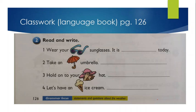Read and write. We have to complete these blanks. First, read each sentence. Wear your sunglasses. When do we wear our sunglasses? When there is sun. So, it is sunny day. Sentence number two. Take an umbrella. When do we take umbrella? When there is raining. Hold on to your hat. It is windy today. Let's have an ice cream. It is hot today.